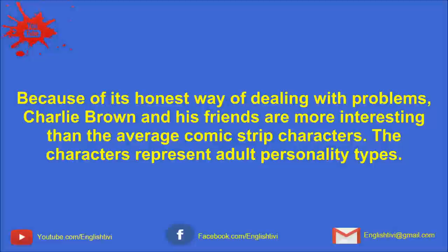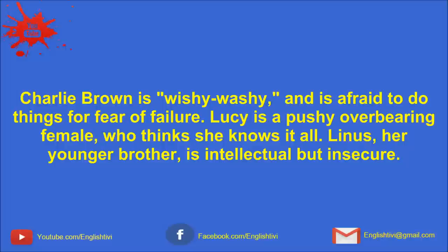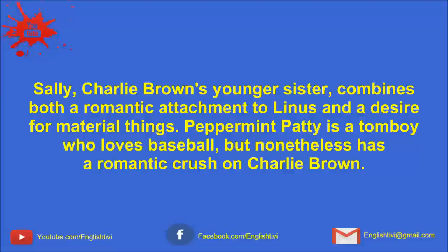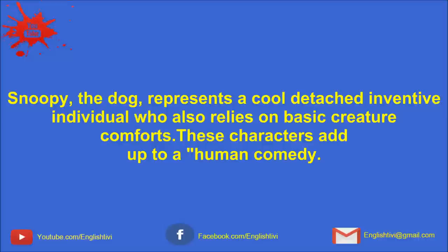The characters represent adult personality types. Charlie Brown is wishy-washy and is afraid to do things for fear of failure. Lucy is a pushy, overbearing female who thinks she knows it all. Linus, her younger brother, is intellectual but insecure. He still clings to his baby blanket for security. Schroeder is preoccupied with Beethoven's music to the exclusion of everything else. Sally, Charlie Brown's younger sister, combines both a romantic attachment to Linus and a desire for material things. Peppermint Patty is a tomboy who loves baseball, but nonetheless has a romantic crush on Charlie Brown. Snoopy, the dog, represents a cool, detached, inventive individual who also relies on basic creature comforts.